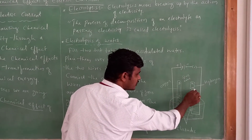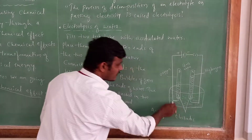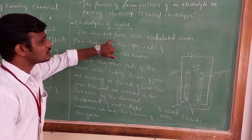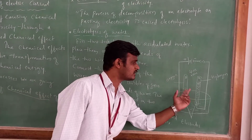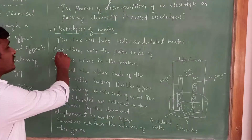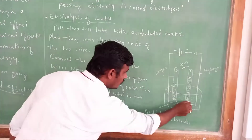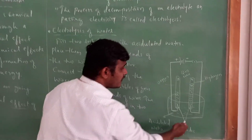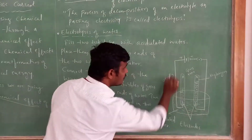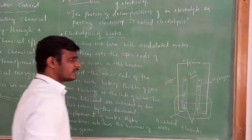We use two test tubes — test tube A and test tube B — connected with the help of electrodes to a battery. Fill the two test tubes with acidulated water and place them over the open ends of the two wires in the beaker. One end of the wire is connected to the positive terminal and the other end to the negative terminal with the help of a plug key.